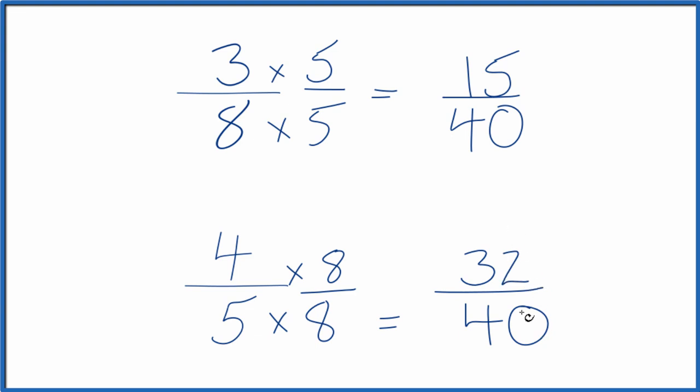And now, since the denominators are the same, we can just compare the numerators. And you can clearly see that 32, that's larger than 15. What that means is that the fraction 4 fifths, that's going to be greater than 3 eighths.